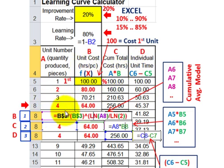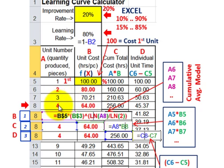For column B, the unit cost function, you enter: equal sign B dollar-sign-5 — that's an absolute reference always coming back to the first unit cost of 100 — times B dollar-sign-3, the absolute reference for the learning rate. Then that quantity is raised to the power using a caret: the natural log Ln of the current row's unit number — for example Ln(A8) for row 8, Ln(A7) for row 7, Ln(A6) for row 6, and so on. This is being indexed — you have to index this formula.